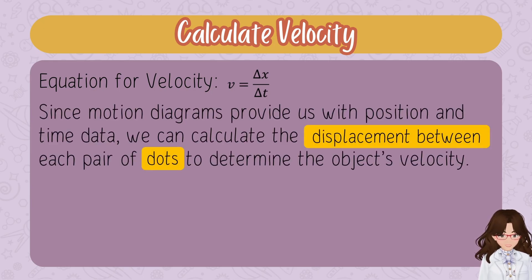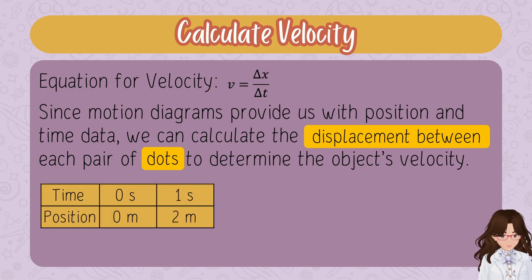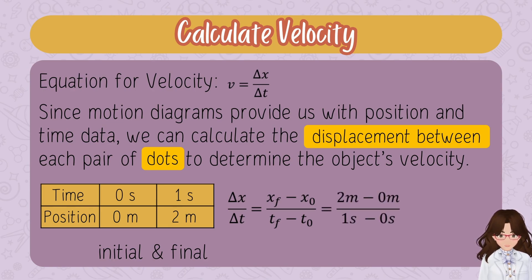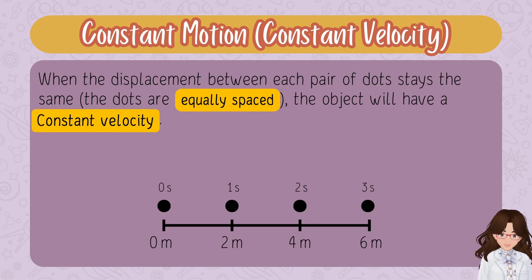Since motion diagrams provide position and time data, we can calculate the displacement between each pair of dots to determine the object's velocity. I'm going to use Δx/Δt. My displacement is the final position minus initial divided by final time minus initial time. Looking at the first two dots, I have two meters minus zero meters divided by one second minus zero seconds. Two divided by one gives me a velocity of positive two meters per second. You can see how to take position and time data to calculate velocity.